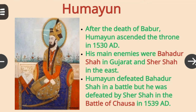After the death of Babar, Humayun ascended the Mughal throne in 1530. His main enemies were Bahadur Shah in Gujarat and Sher Shah in the east. Humayun defeated Bahadur Shah in a battle, but he was defeated by Sher Shah in the Battle of Chausa in 1539.